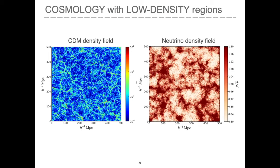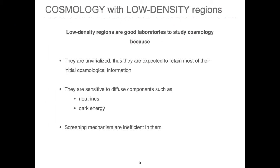Indeed, neutrinos have a very smooth and diffuse density field that is very close to the background. On the other hand, cold dark matter has small-scale structures and reaches much higher densities in halos. Therefore, neutrinos are a negligible fraction of the total matter in halos, but they are a considerable fraction of the total matter in low-density regions, since these are devoid of cold dark matter. Therefore, low-density regions are expected to be more sensitive to the neutrino mass scale than high-density regions. Finally, low-density regions can be sensitive to potential modifications of gravity, since screening mechanisms are inefficient in them.